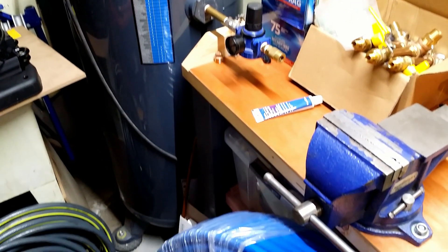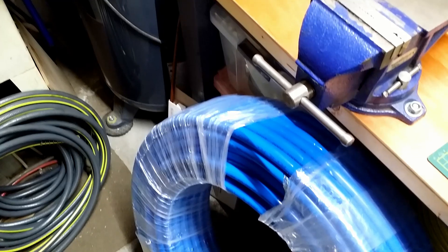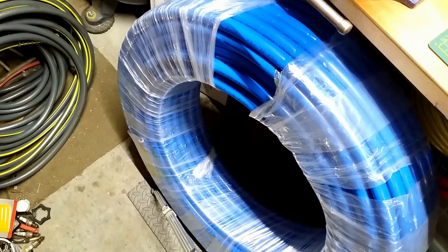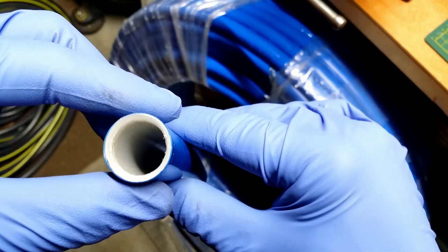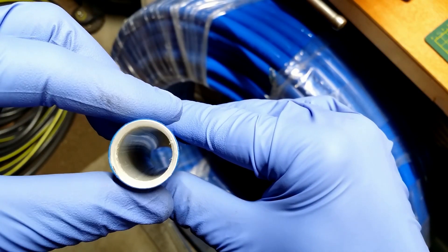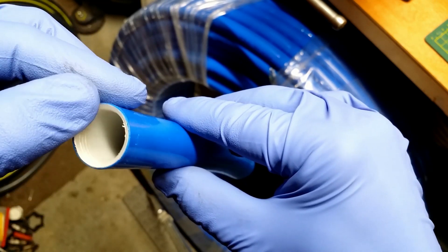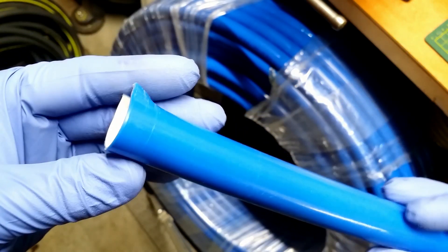But recently I got this 300 feet tubing for compressed air. It is three quarter inside diameter tubing, PEX outside, aluminum core and PEX layer inside.